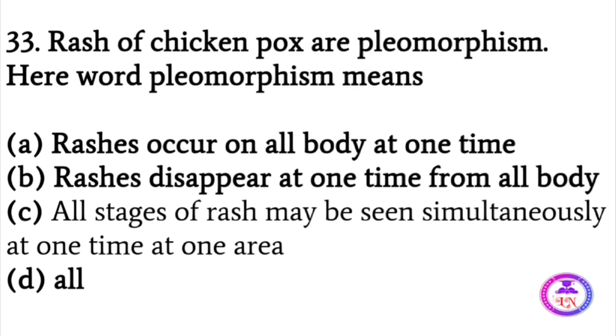The rash of chickenpox is pleomorphic. The word pleomorphism means that all stages of the rash may be seen simultaneously at one time, at one area.